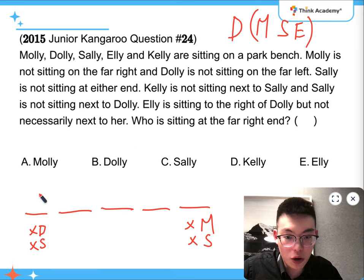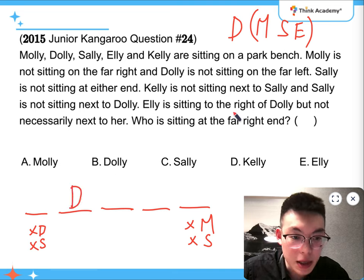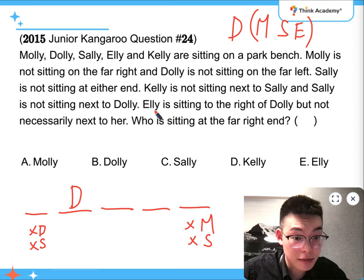So Dolly, if not on the left end, has to be right there. That's to the left of Ellie, because Ellie is to the right. So now we know that Molly is not at the right end. So it means that the Ellie, Sally, Molly combination doesn't work, because then Molly will squeeze at the right end.